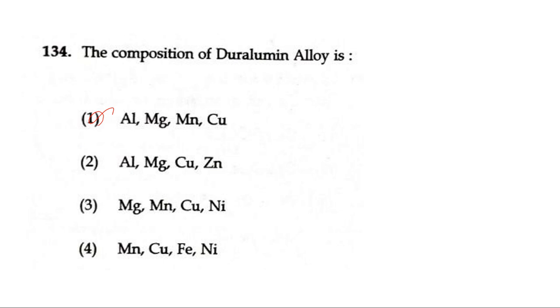Here we are going to discuss the solution for the chemistry exam in NTSC 2022. Question 134: The composition of duralumin alloy is? Option 1 is aluminium, magnesium, manganese and copper. Option 2 is aluminium, magnesium, copper and zinc. Option 3 is magnesium, manganese, copper and nickel. Option 4 is manganese, copper, iron and nickel. The correct option is option 1: aluminium, magnesium, manganese and copper. Duralumin is a very significant alloy in the iron and steel industry.